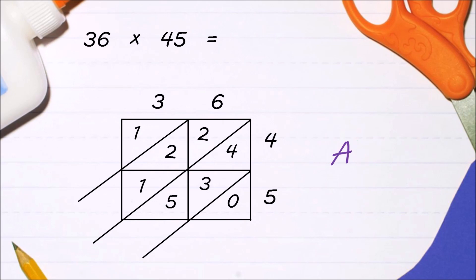Next, let's add all the numbers inside the box diagonally from right to left. Bring down zero. Four plus three plus five is 12. Regroup one. One plus two plus two plus one is six. And bring down one.